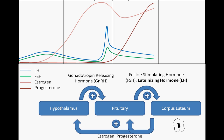Thus, as an egg is released into the female reproductive tract and made available for fertilization, the uterus becomes fully equipped to house the potential embryo. However, in a classic example of negative feedback, the estrogen and progesterone produced by the corpus luteum have an inhibitory effect on the pituitary and the hypothalamus, shutting down production of FSH and LH — the very hormones that maintain the corpus luteum.